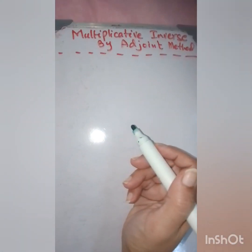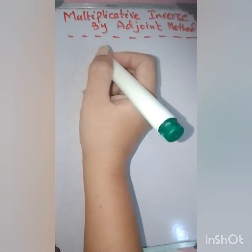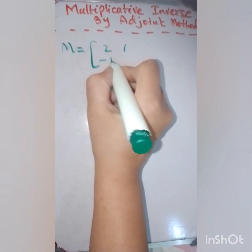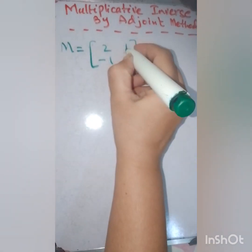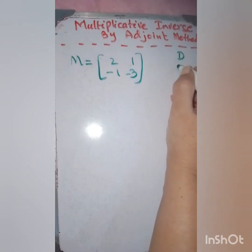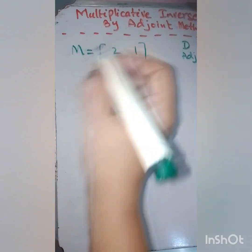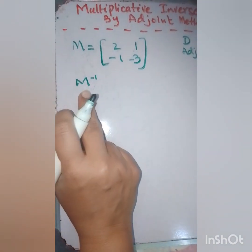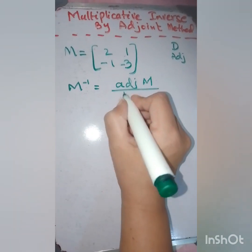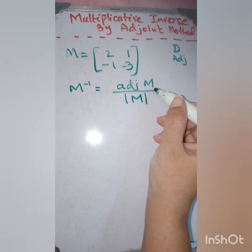Now that we have learned all the components, we are going to solve the main question using the adjoint method. Suppose M equals [2, 1; -1, -3]. The formula for multiplicative inverse is: M inverse equals the adjoint of M divided by the determinant of M. We will first find the determinant, check singular or non-singular, then find the adjoint.